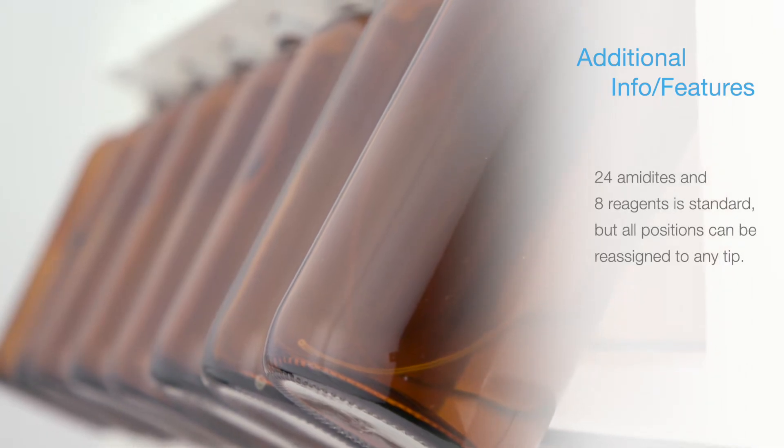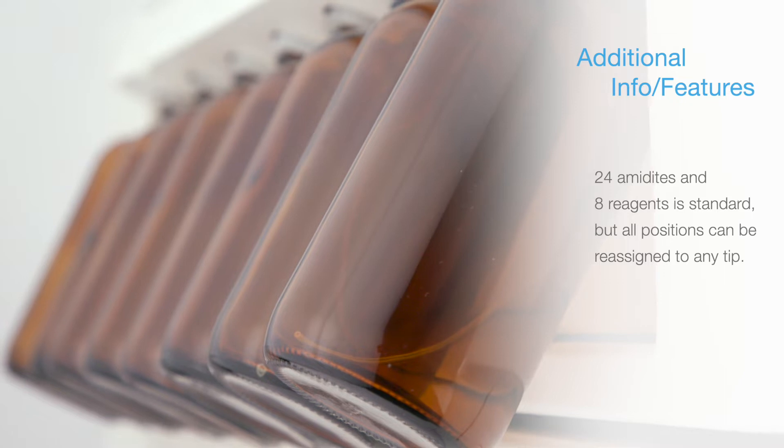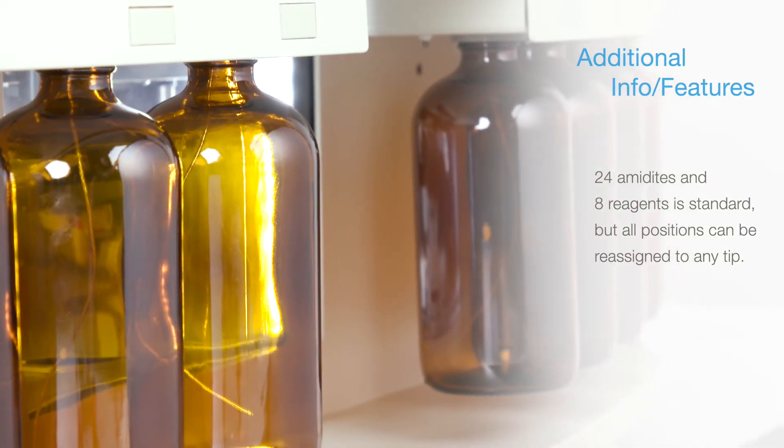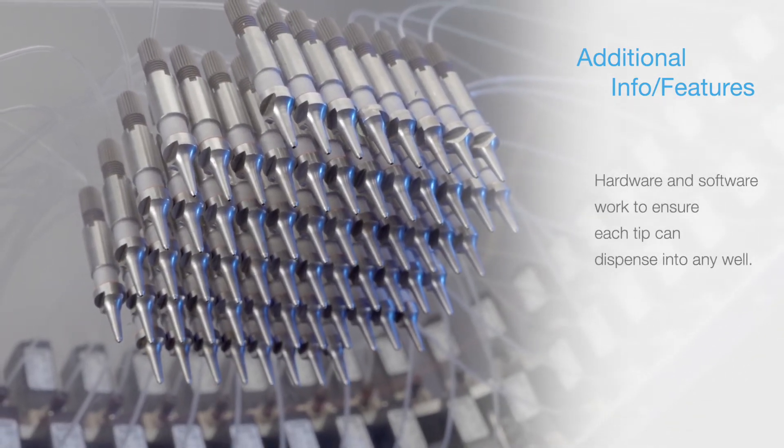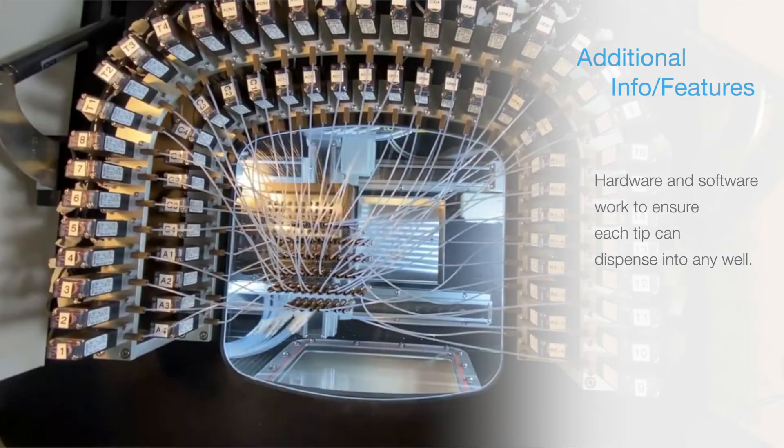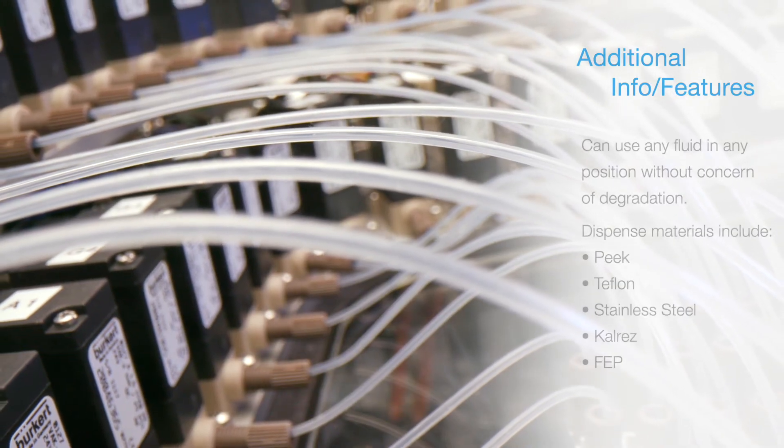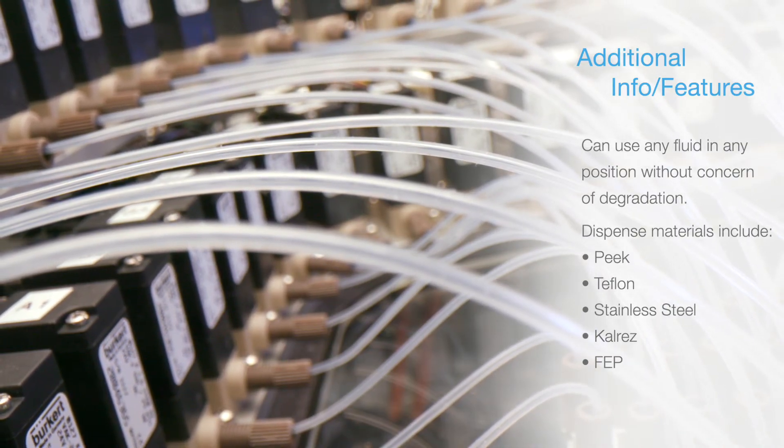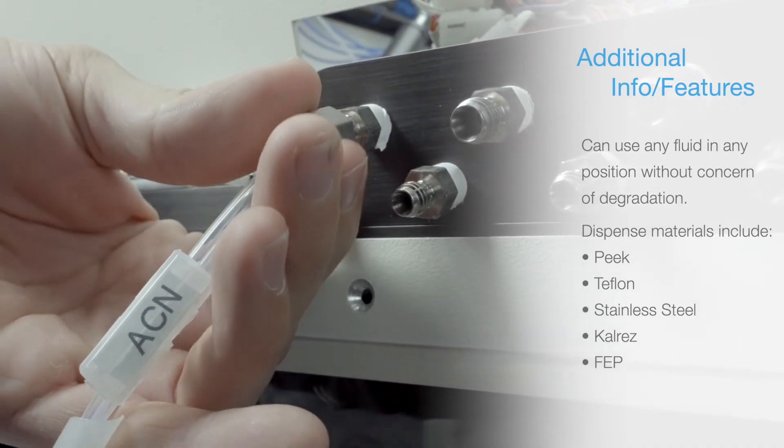The Shasta comes standard with 24 amidite positions and 8 reagent positions. That said, you can assign any fluid to any valve on the instrument you like. The hardware and software work together in such a way that each nozzle can hit any well of the plate, and each fluid line is made from a combination of either Teflon, CalRes, stainless steel, or Peek, so you can plumb any fluid into any position you like without fear of degradation.